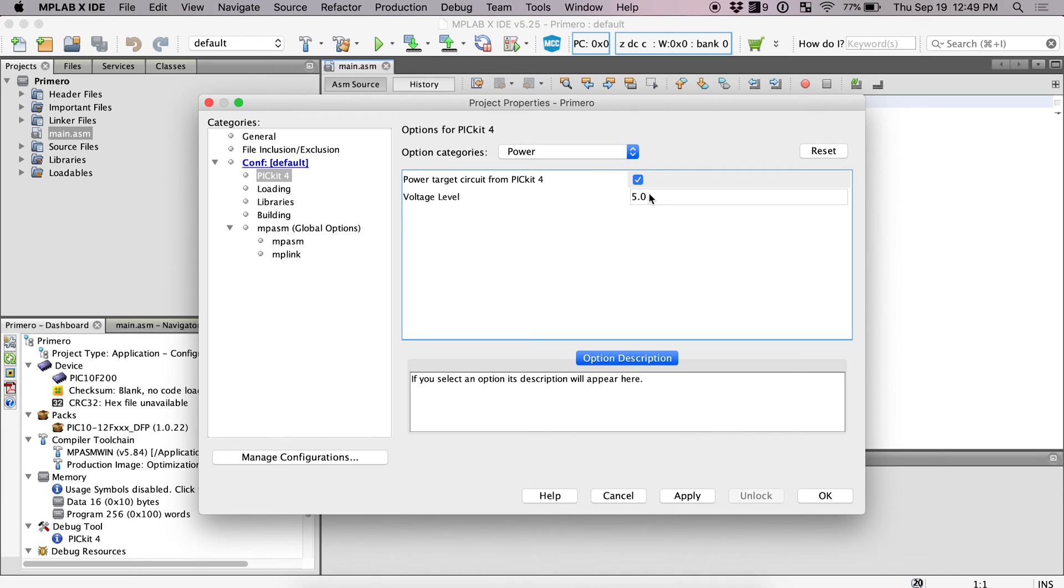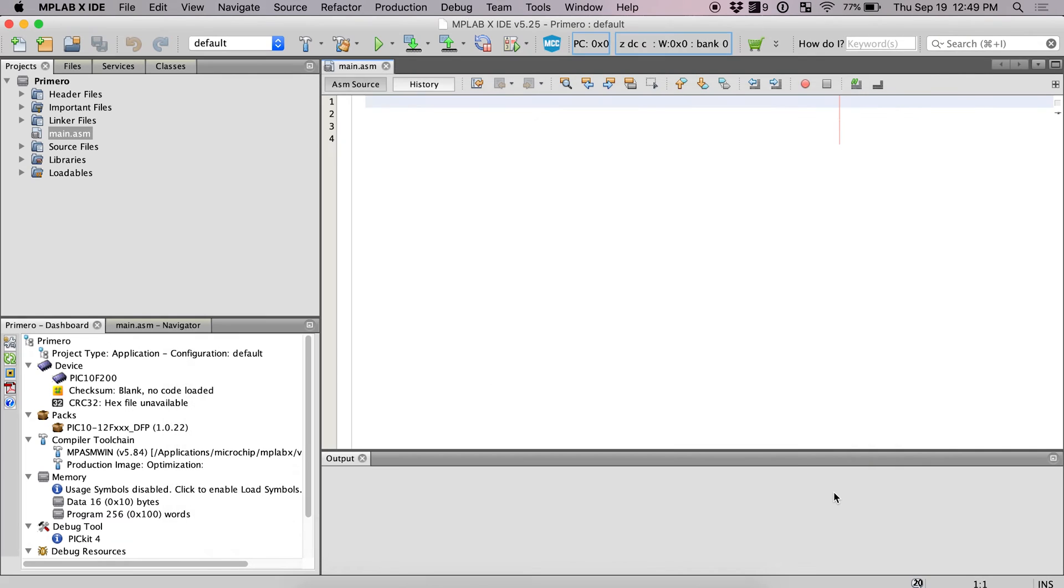So now the PIC 10F 200 can run at five volts. So we don't have any problem. If you end up using a different microcontroller, and it can only go up to 3.3 volts, you need to make sure that this voltage level is no higher than the max voltage level of your microcontroller. And you should be good. And then you click OK.